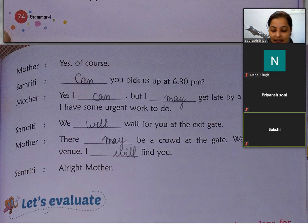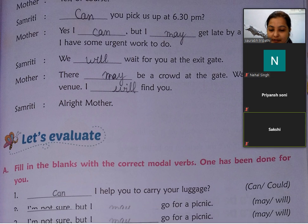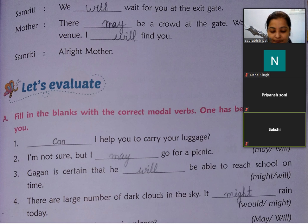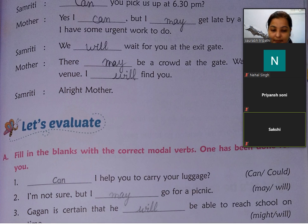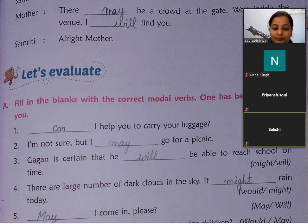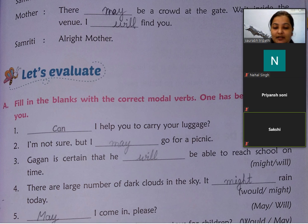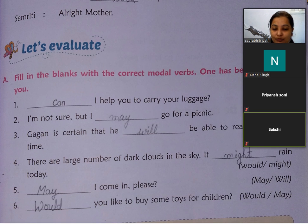Next हम आते हैं Let's Evaluate में — यहाँ पर भी exercise है। आप book में करिएगा। यहाँ पर options दिये गए हैं: can, could, may, will — इन्हें sentence में fill करना है। अगर confusion हो कि यहाँ क्या लगेगा, तो उस sentence को अपनी language में translate कर सकते हैं। Translate करने पर समझ आ जाएगा — can लगाएंगे, may लगाएंगे, या will लगाएंगे।